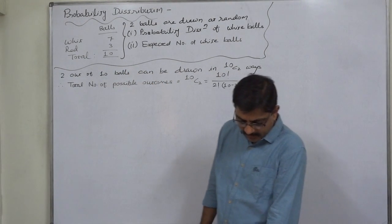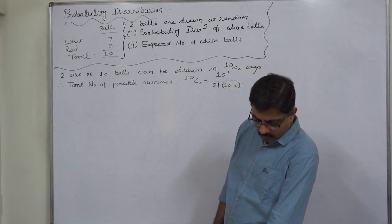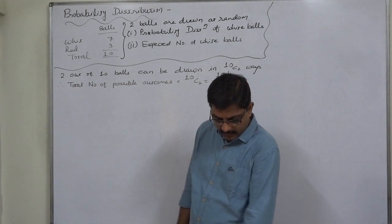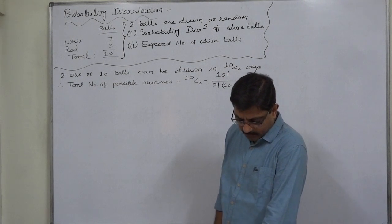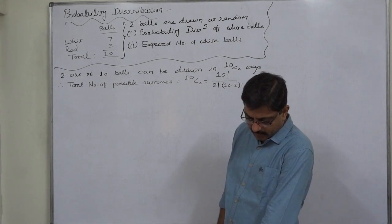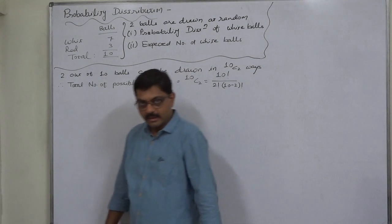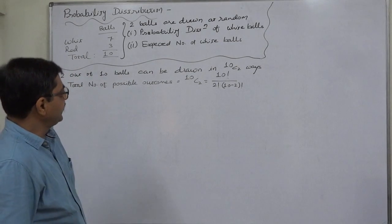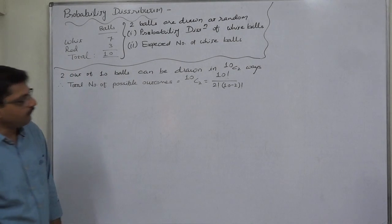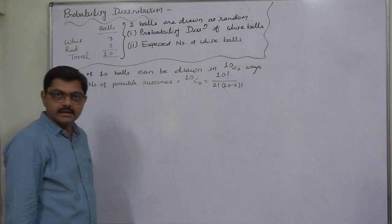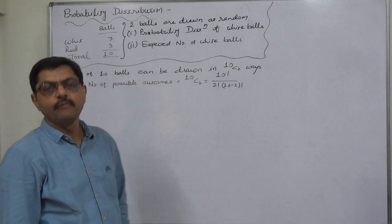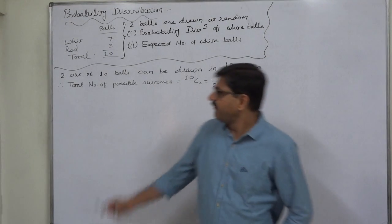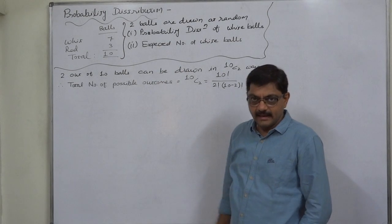Compute the probability that neither of them is white. Also find the probability of getting one white and one red ball. Hence compute the expected number of white balls. To find the expected number of white balls, we should have the probability distribution of the number of white balls. Now if we draw two balls out of ten,